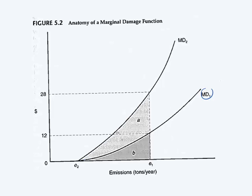So MD1 is much lower than MD2, even though it's the same pollutant. Because damages depend on the people, this pollutant in two scenarios has one a low marginal damage function and another scenario a higher marginal damage function.